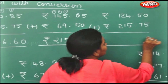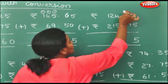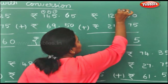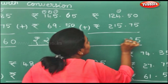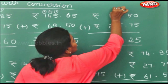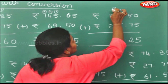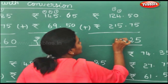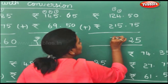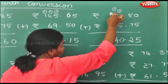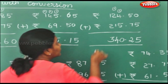5. 7 plus 5 is 12. 5 plus 5 is 10. 2 plus 1 is 3. 3 plus 1 is 4. 1 plus 2 is 3. You can either add from top to bottom or bottom to top.